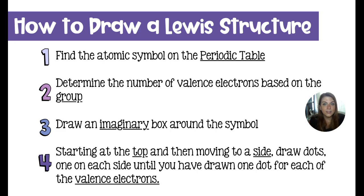So the thing that you're going to do is find the element symbol on the periodic table, figure out the number of valence electrons it has based on its group number. Then you are going to draw an imaginary box around that symbol, four-sided box, and then you're going to start at the top and then move either side. It doesn't matter. You're going to draw dots on each side of this imaginary box until you have drawn enough dots for each valence electron.